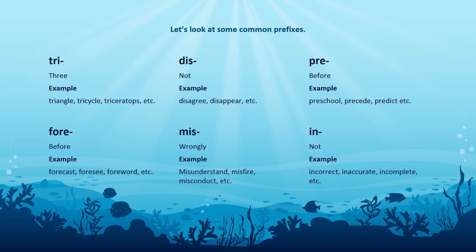There are six common prefixes I want us to look at today. The first is tri, meaning three. For example, triangle — a triangle has three angles, you should know this from maths. A tricycle: think of a bicycle, bi means two wheels, so a tricycle has three wheels. And lastly, a triceratops, which has three of something — write that down and let's see how many of you get it.